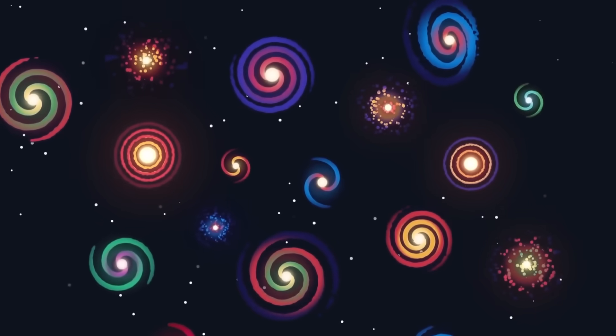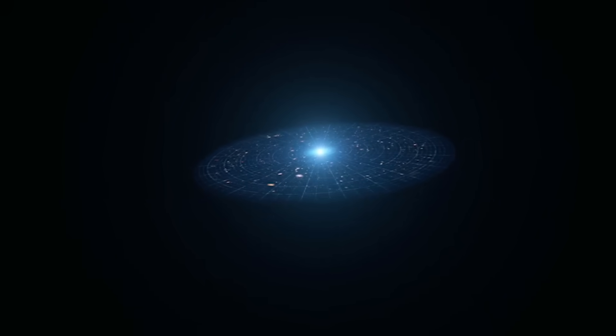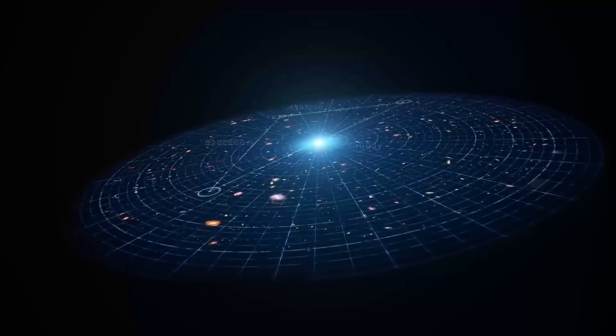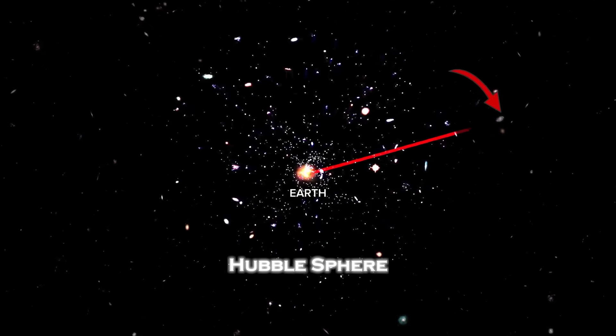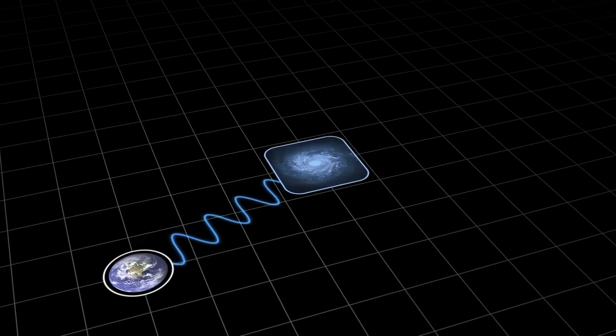To understand why this is shaking cosmology to its core, we need to talk about the Hubble sphere and the observable universe. The farther away an object is, the faster it moves away from us due to the expansion of space. At a certain point, called the Hubble sphere, galaxies are moving away from us faster than the speed of light.